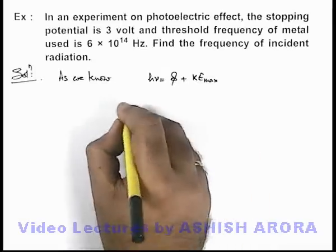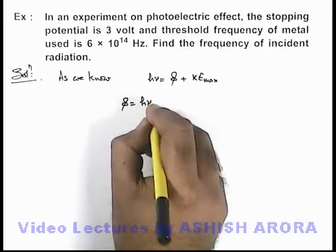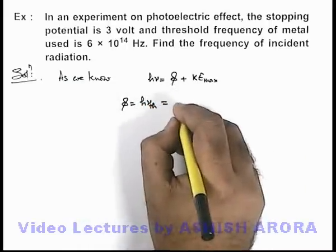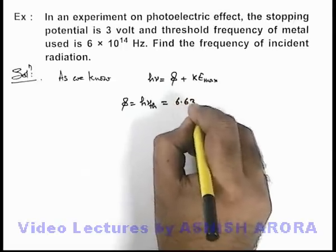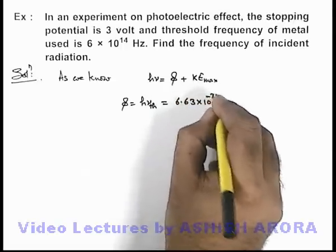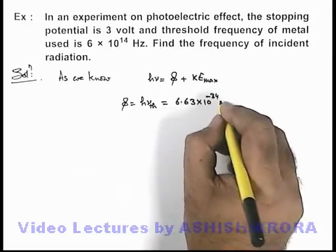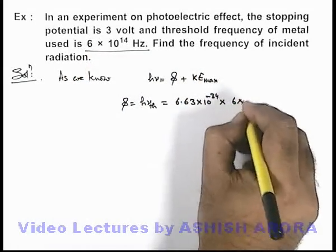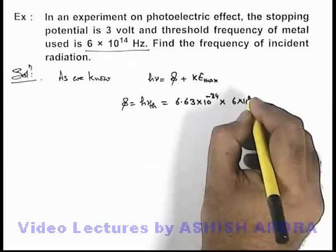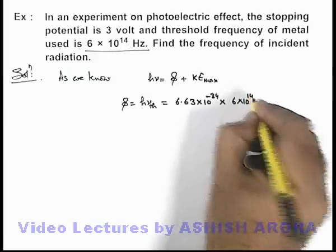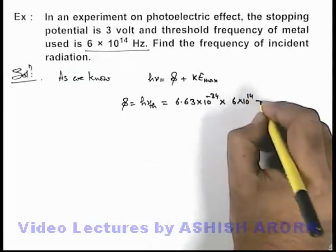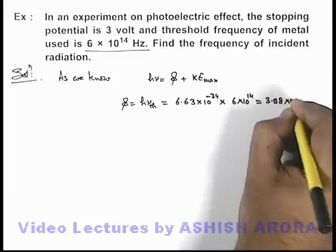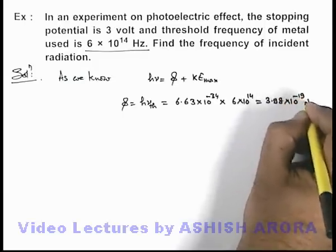The value of work function we know is given as h nu threshold. So if we substitute the value of h, we can take as 6.63 into 10 to the power minus 34, multiplied by the threshold frequency we are given as 6 into 10 to the power 14 hertz. So on simplifying, we are getting the work function to be 3.98 into 10 to the power minus 19 joule.